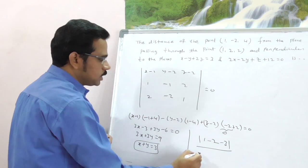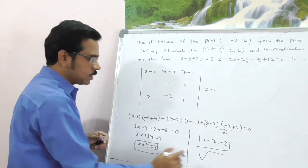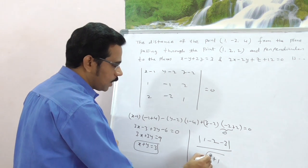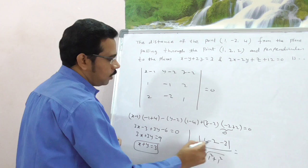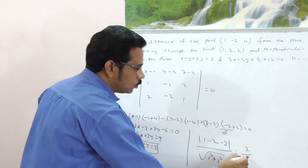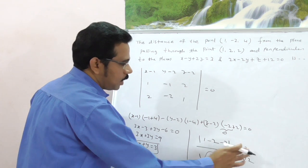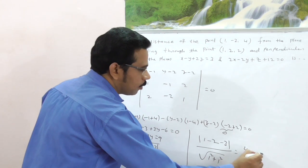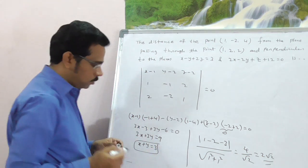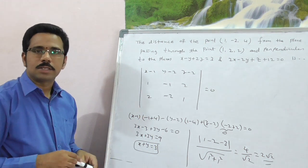This is -3 by square root of X coefficient square, 1 square plus 1 square. Now, this is equal, what is this value? 2 by root 2, -5 + 1, that is nothing but 4 by root 2. 4 by root 2 value is 2 root 2. Right? This is your final answer. Okay?